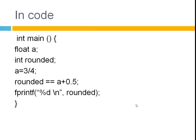So we'll just have a quick look at what that would look like in code. You start with a main function. You've got a number that's a float — a is 3 divided by 4, which is 0.75. And we've got rounded as an integer, so it's only going to take the whole number. We've added a half to a, so we've got 1.25. The computer will ignore the 0.25, so it'll leave you with 1.